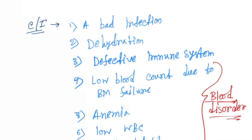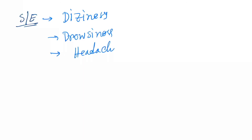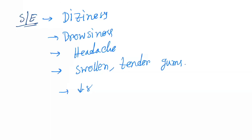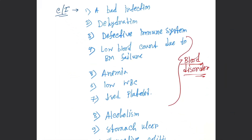Now for the side effects: methotrexate can cause dizziness, drowsiness, headache, swollen and tender gums, decreased appetite, and hair loss.